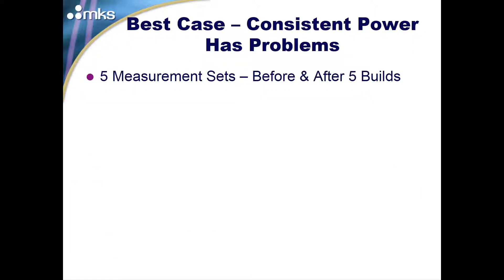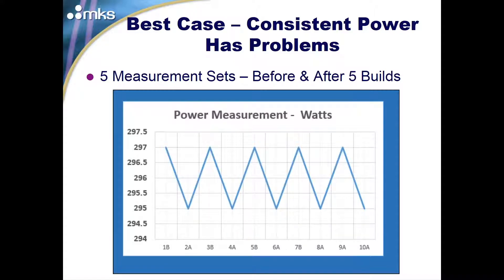Even consistent power has problems. This chart shows power measurements over five builds, before and after. The upper measurement shows 297 watts consistently — at the end of a build it's 295, next build it's 297 again. That's very repeatable and consistent. But we also need to measure before and after each build to ensure consistency, especially if the laser begins to demonstrate any inconsistency, so we can find out what's causing those changes.